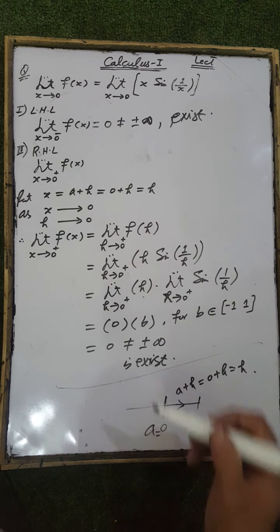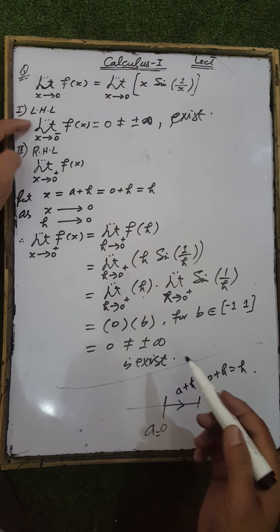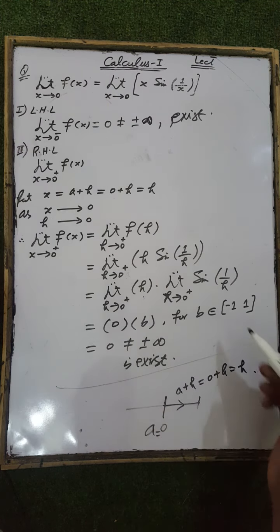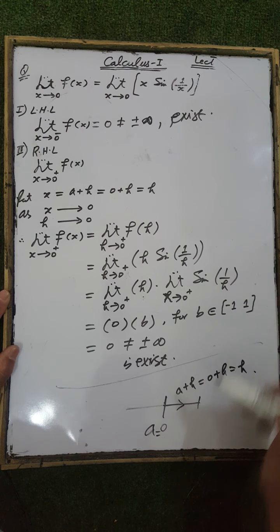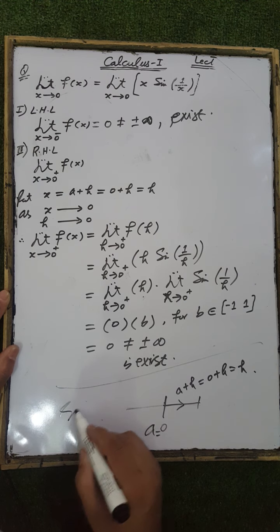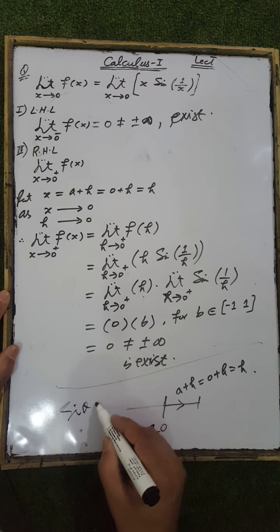As explained in the calculation of the left-hand limit, the range of sin(θ) is the closed interval from minus 1 to 1.